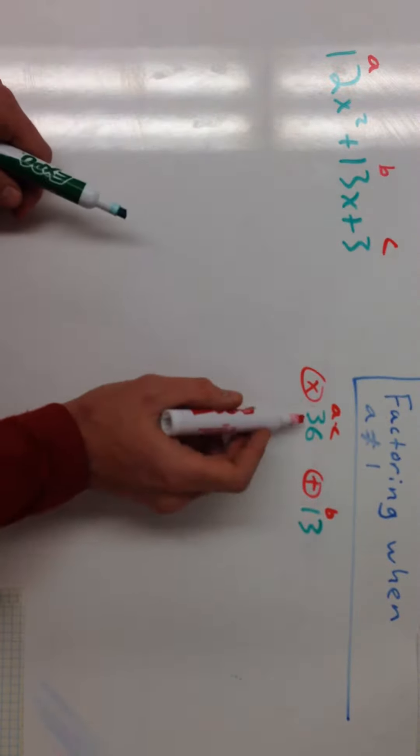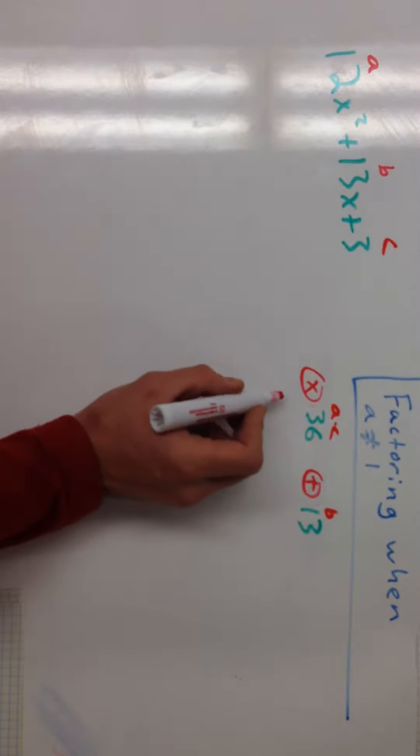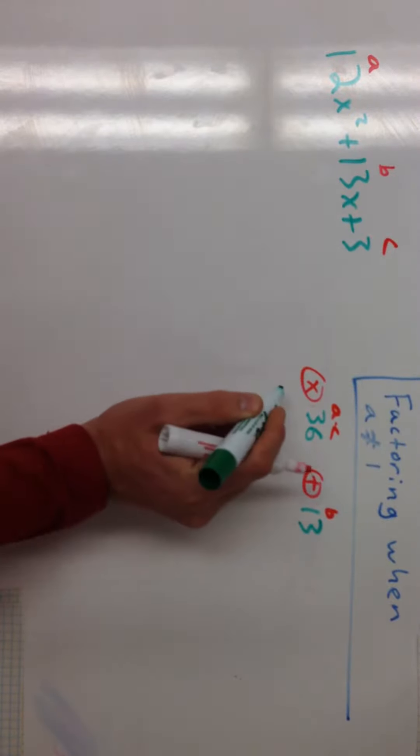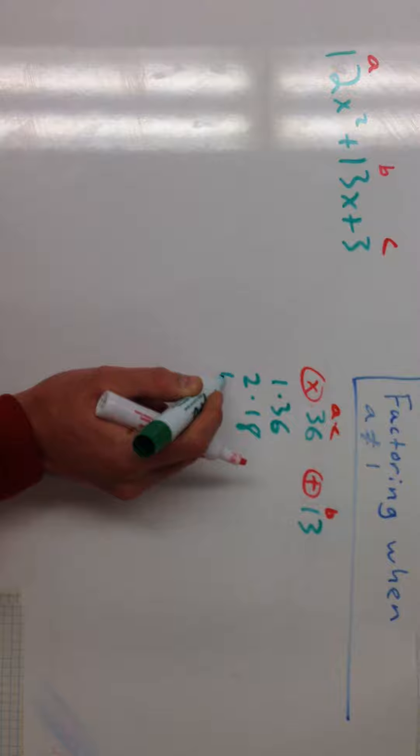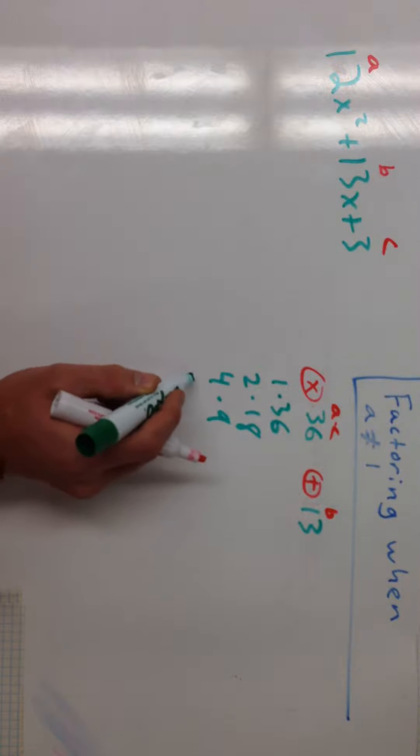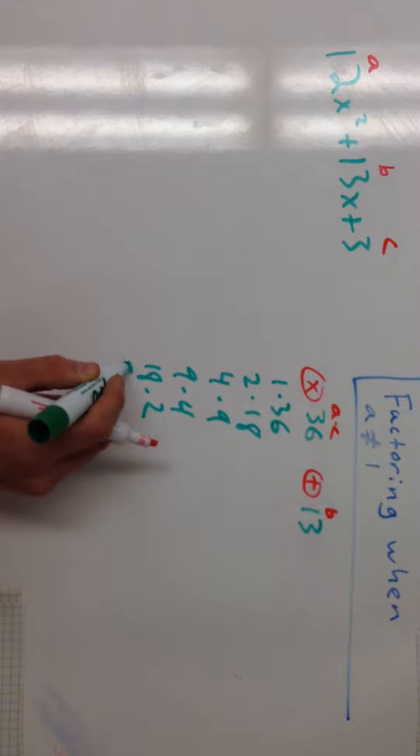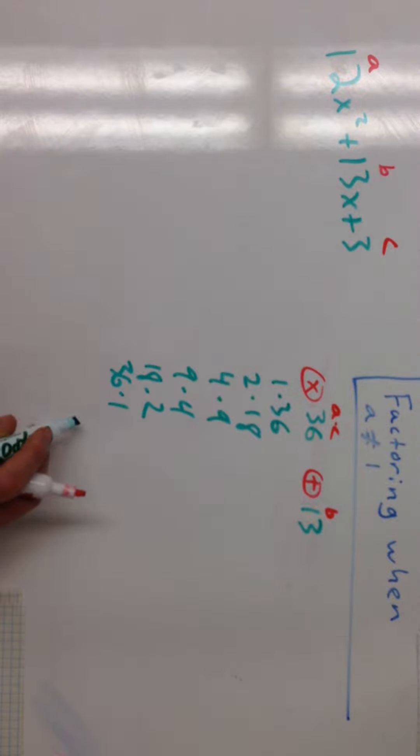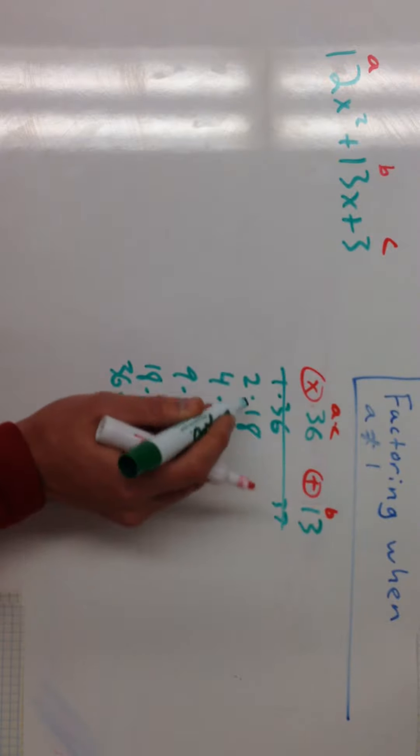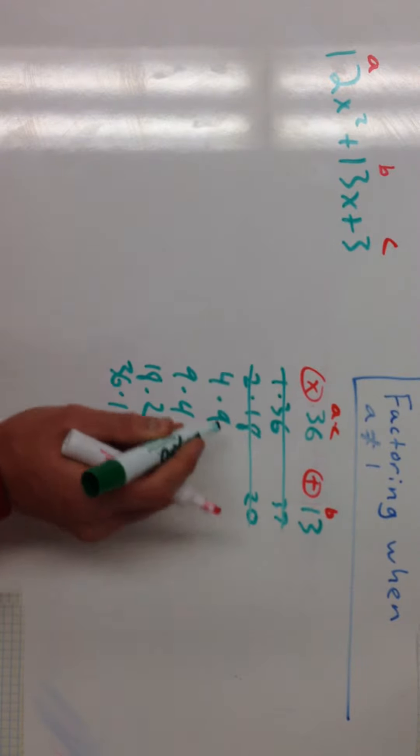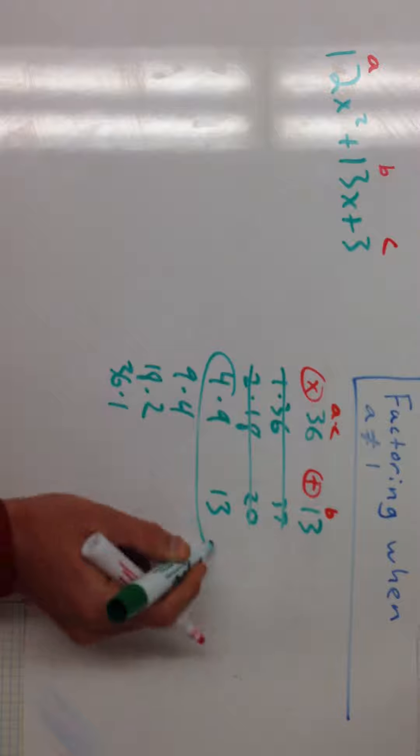I'm going to start coming up with these factors. 36. So let's see here. I could do 1 and 36, 2 and 18, 4 and 9, 9 and 4, 18 and 2, 36 and 1. So I'm going to start adding these up together. This will be 37, so that's no good. This will be 20, so that's no good. This will be 13. We have a winner.